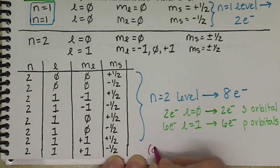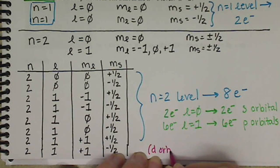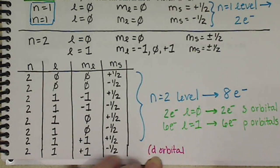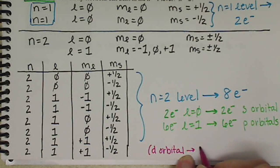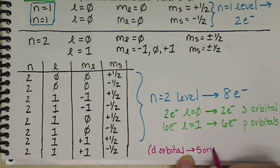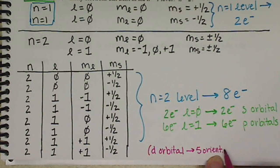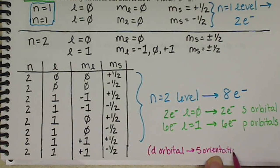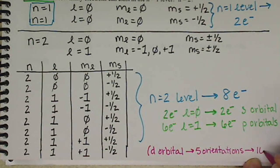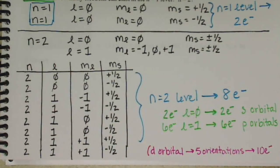In the d orbital, we have 5 orientations, which means 2 electrons per orientation, which means it can hold 10 electrons.